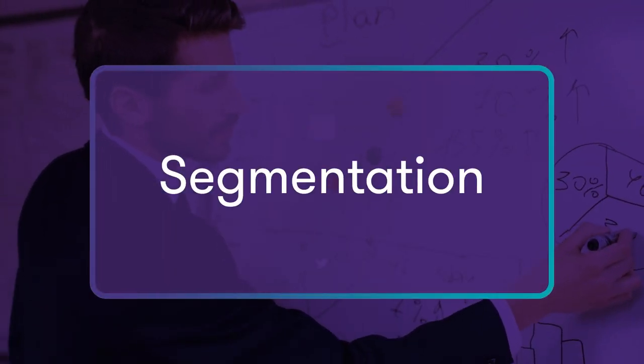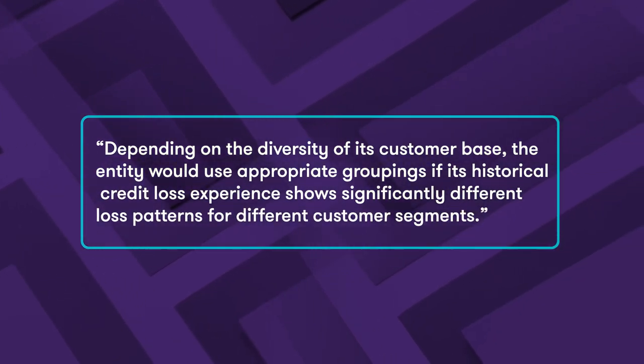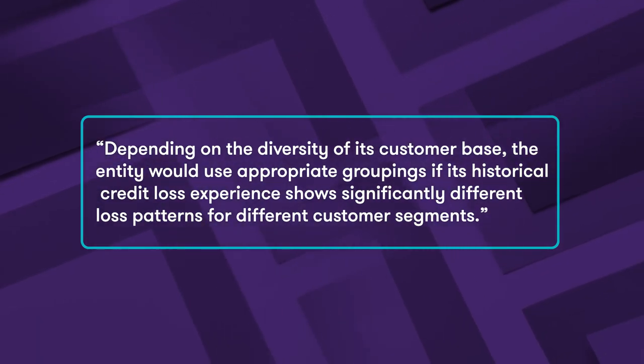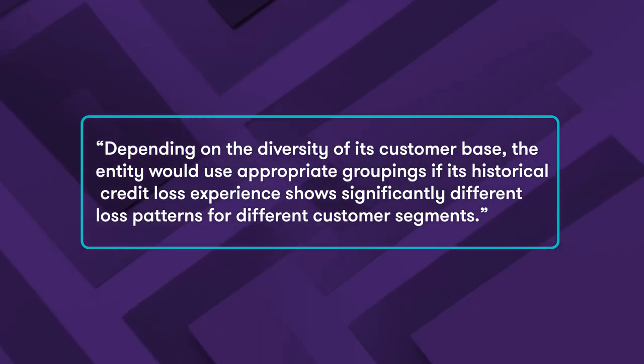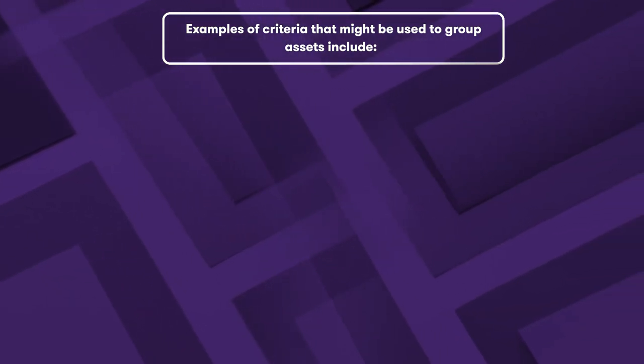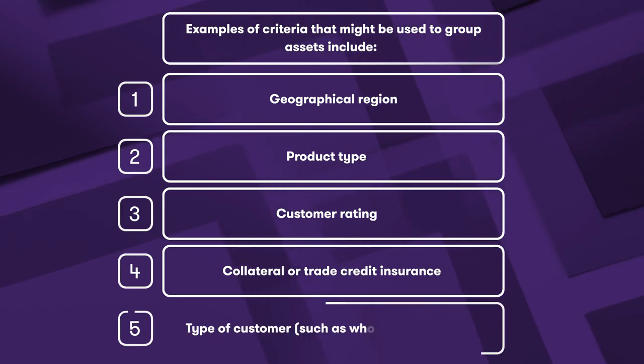Let's first look at what the standard says about segmentation. IFRS 9 states that depending on the diversity of its customer base, the entity will use appropriate groupings if its historical credit loss experience shows significantly different loss patterns for different customer segments. Examples of criteria that might be used to group assets include geographical region, product type, customer rating, collateral or trade credit insurance, and type of customer such as wholesale or retail. So it's clear that we can break up a loan book in a manner that makes sense from a credit risk perspective, such that the pools that come out of it have shared credit risk characteristics.